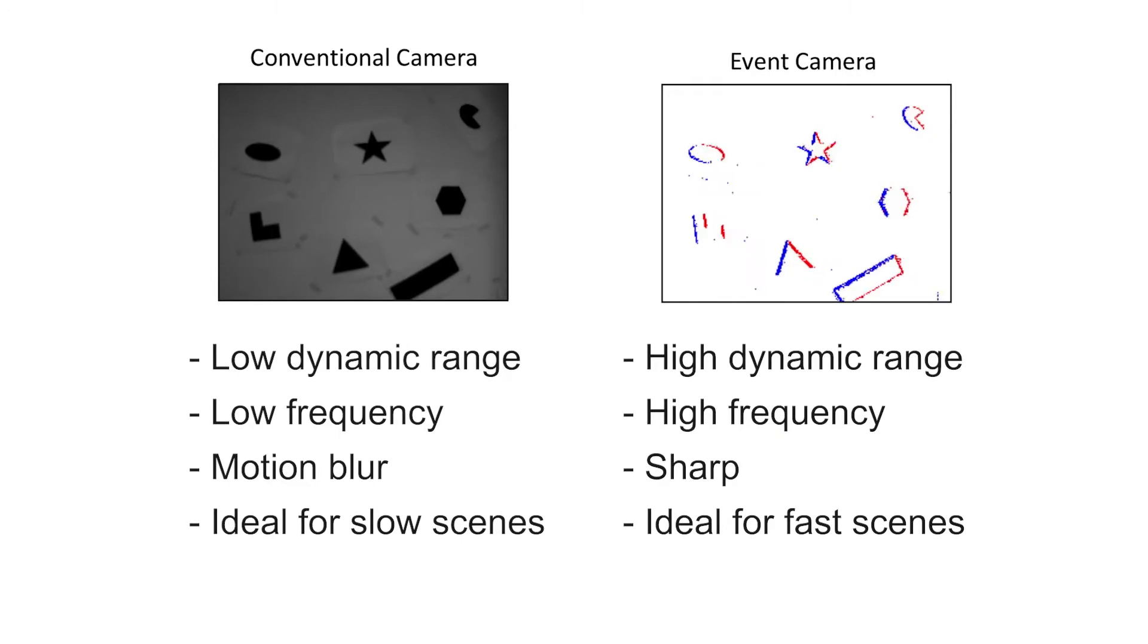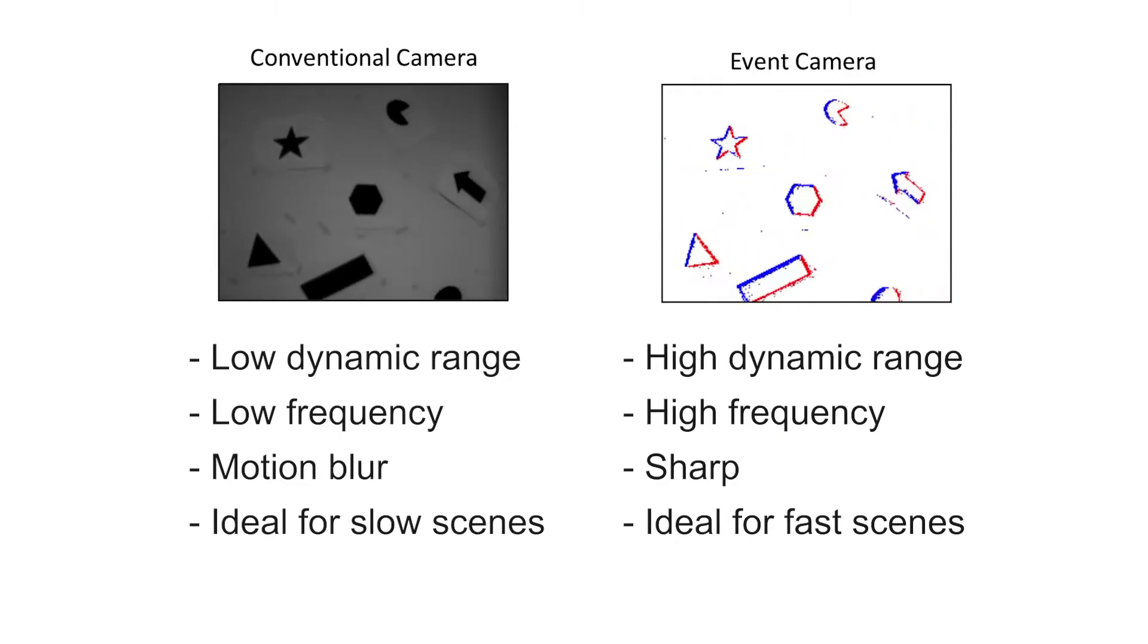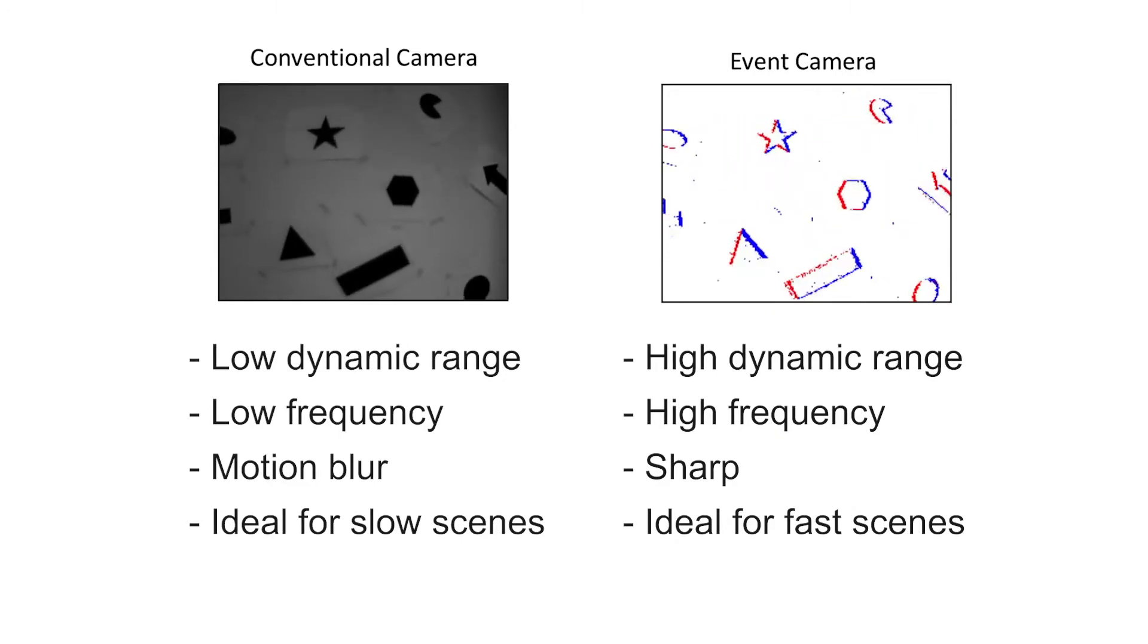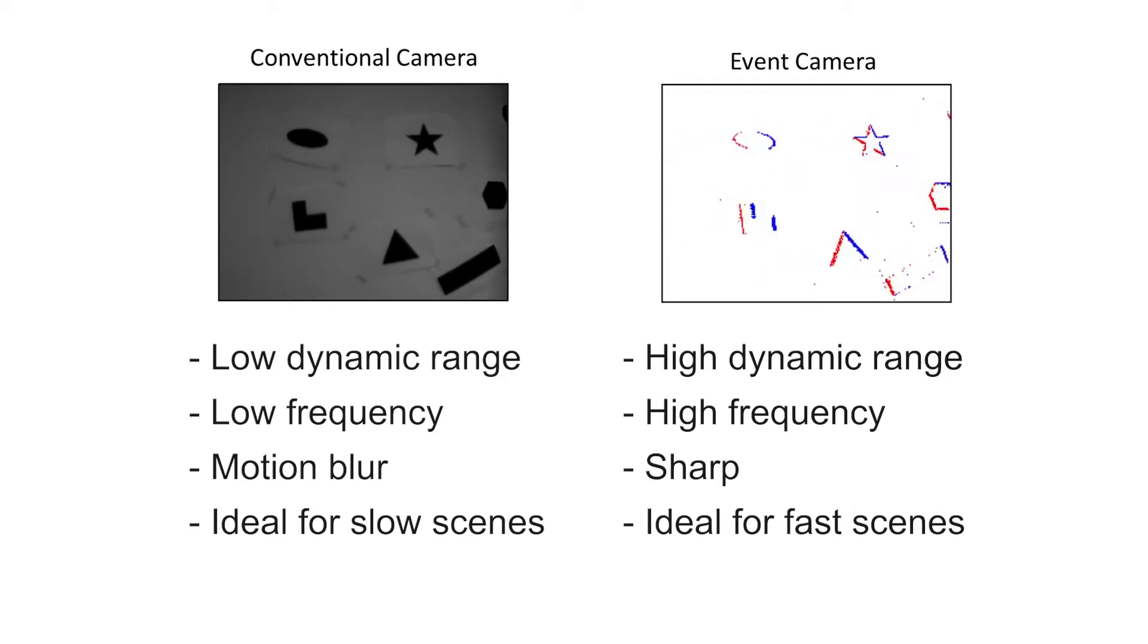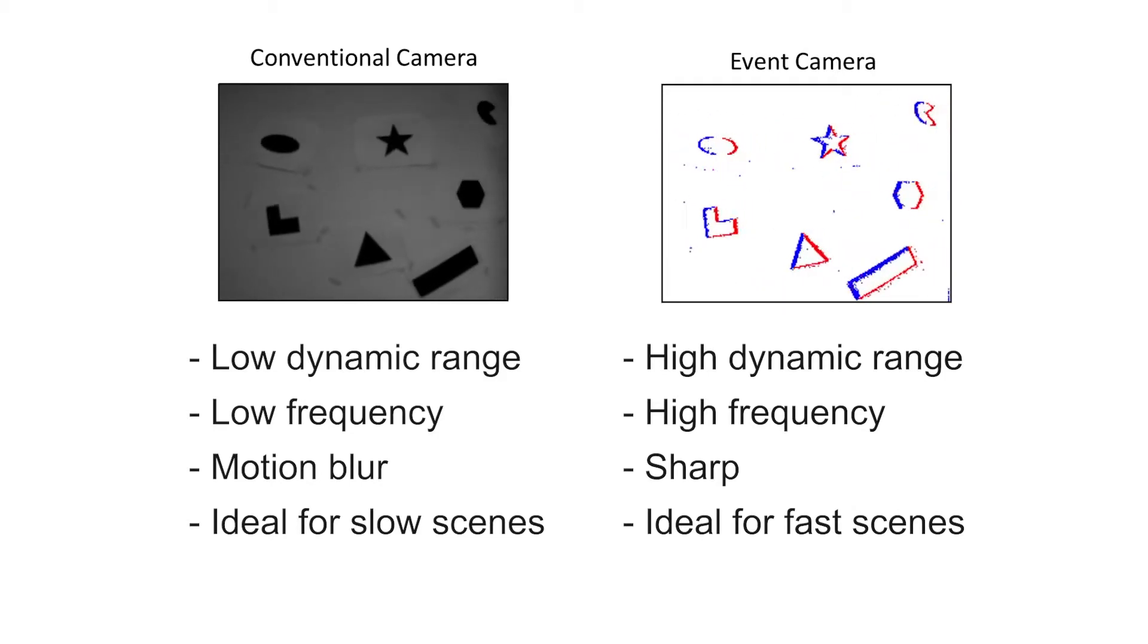Conventional cameras are relatively low dynamic range, low frequency frame rate, easily motion blurred in the presence of fast motion, but ideal for capturing slow or static scenes.